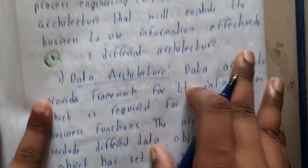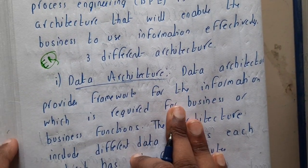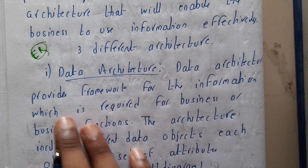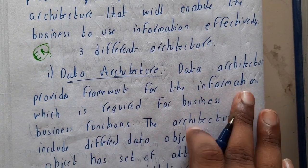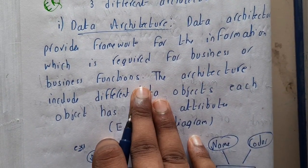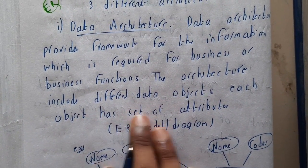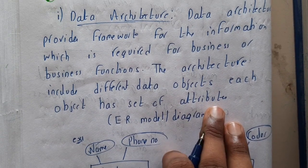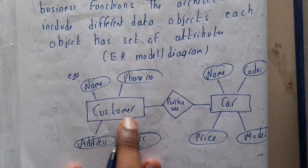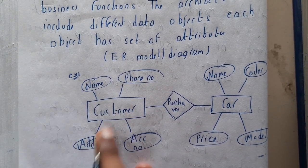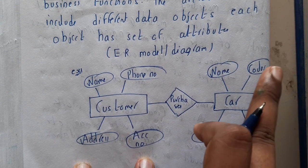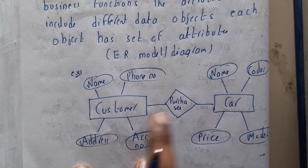The three different architectures — the first architecture is data attributes architecture. The data architecture provides the framework for the information which is required for the business or business functions. The architecture includes different data objects, and each object has a set of attributes. For example, a customer has attributes like name, phone number, address, and account number.